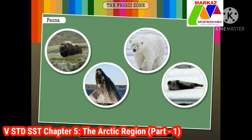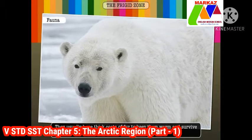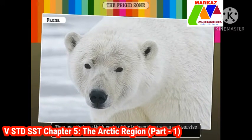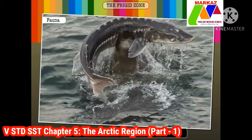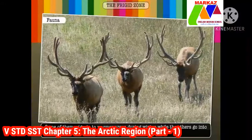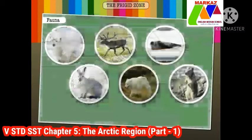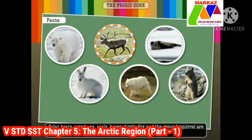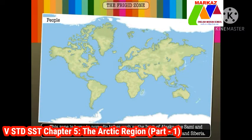This zone has both land and sea animals. The animals found here have adapted to the extremely cold climate. They usually have thick coats of fur to keep them warm and survive the scarcity of food. Most animals depend on other animals for food. Some migrate to warmer areas during winter while others go into deep sleep or hibernation. Polar bears, reindeer, seals, hares, arctic foxes, and the ground squirrel are some animals that live here.